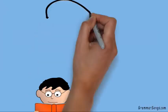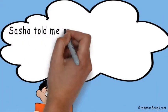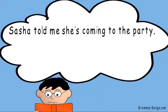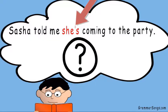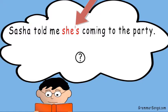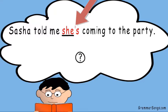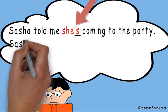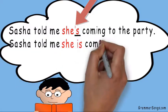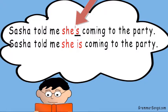Let's read another sentence. Sasha told me she's coming to the party. Since the word 'she's' has an apostrophe, it's a clue that the word 'she's' could be a contraction. So what does 'she's' mean? What two words did the author combine to make 'she's'? I noticed the contraction 'she's' has the word 'she' in it. So what other word did the author combine with 'she' to form the contraction 'she's'? The remaining S is a clue. Sasha told me she is coming to the party. The contraction 'she's' and the words 'she is' have the same meaning.